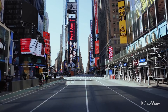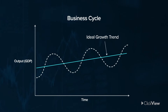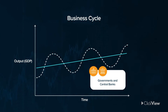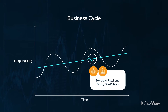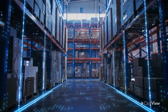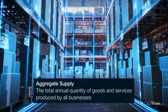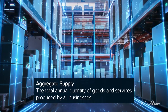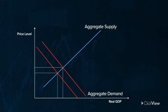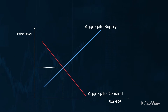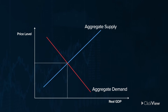An economy can also stagnate with zero or minuscule growth. The blue line on this graph shows the ideal trend for the business cycle — a trajectory of smooth growth. Governments and central banks try to smooth the growth path in line with historic growth rate trends by applying monetary, fiscal, and supply-side policies. The other major influence on the business cycle is aggregate supply — the total annual quantity of goods and services produced by all businesses. An increase in aggregate supply leads to the long-term upward trend in the business cycle, seen as essential to the economic health of a nation. Think of aggregate supply as a bit like the speed limit of the economy.